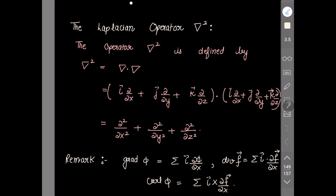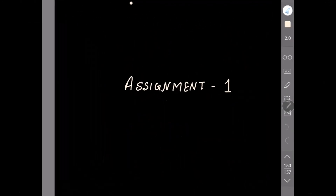So when the divergence of a vector is zero it's a solenoidal vector, and when the curl of a vector is zero it's an irrotational vector. Now some remarks we need to recall to solve the assignments: grad φ equals summation i ∂φ/∂x; divergence of a vector equals summation i dot ∂F/∂x; curl of a vector equals summation i cross ∂F/∂x.